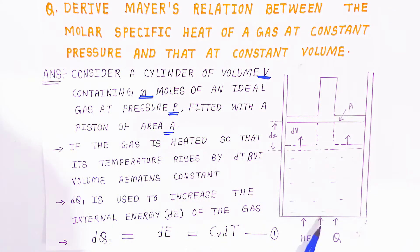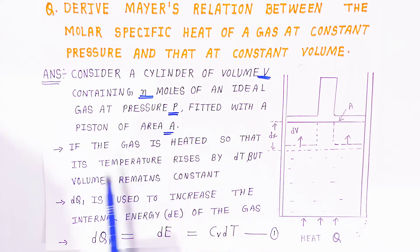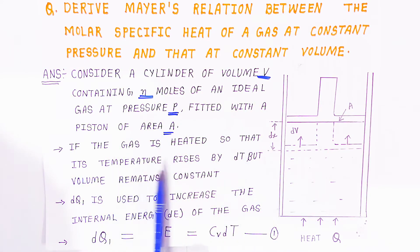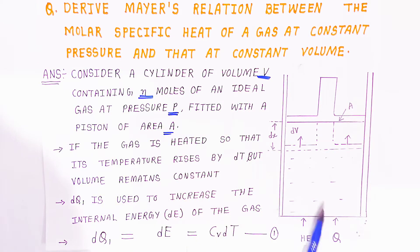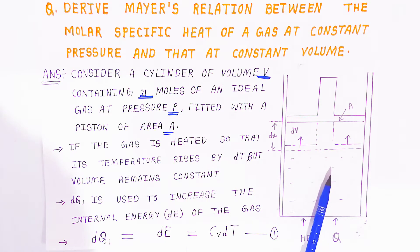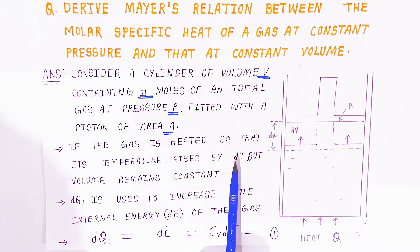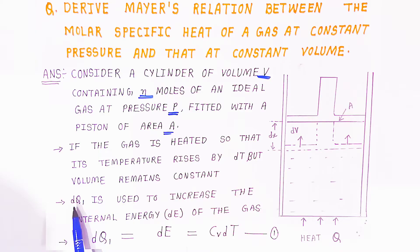If the gas is heated, its temperature increases by a small amount dT, while the volume remains constant. The gas molecules absorb the heat first, so the temperature increases by dT but the volume does not increase. The heat dQ1 is used to increase the internal energy of the gas only.